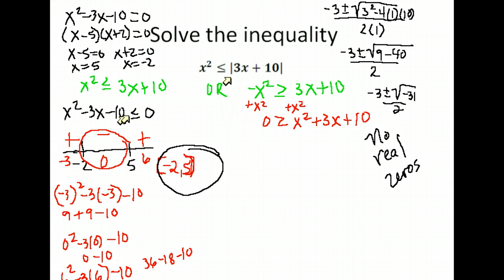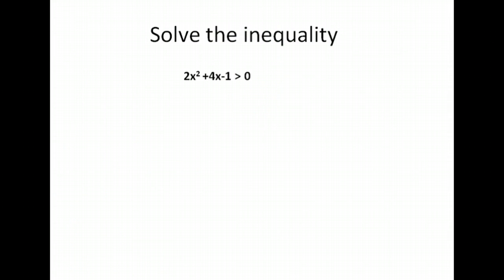Since the second case gives no real zeros, our only solution is the result from the first case: the interval from negative 2 to positive 5. If we had gotten real answers from the second case, we would have had to find decimal approximations, set up intervals, and test them as well. Those are examples of solving quadratic inequalities and absolute value inequalities.